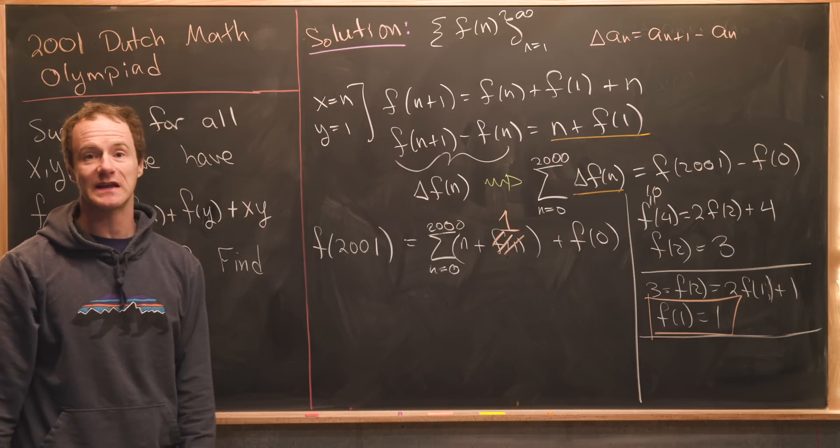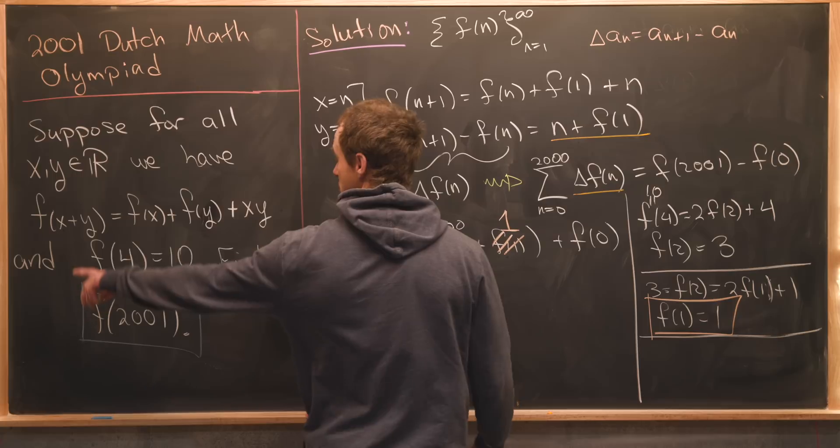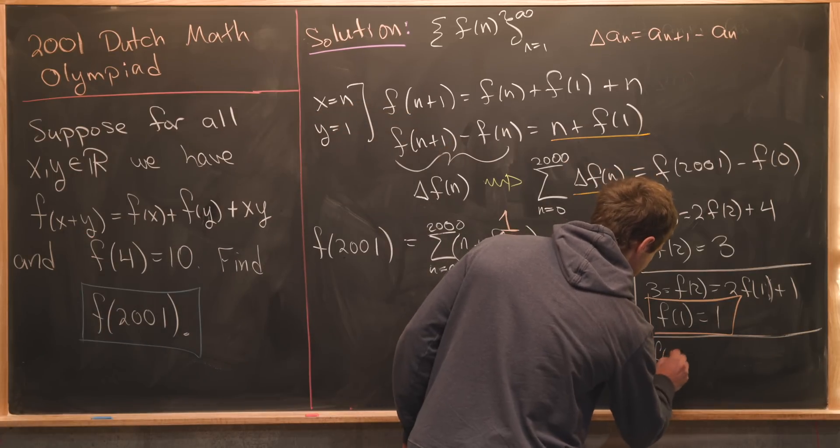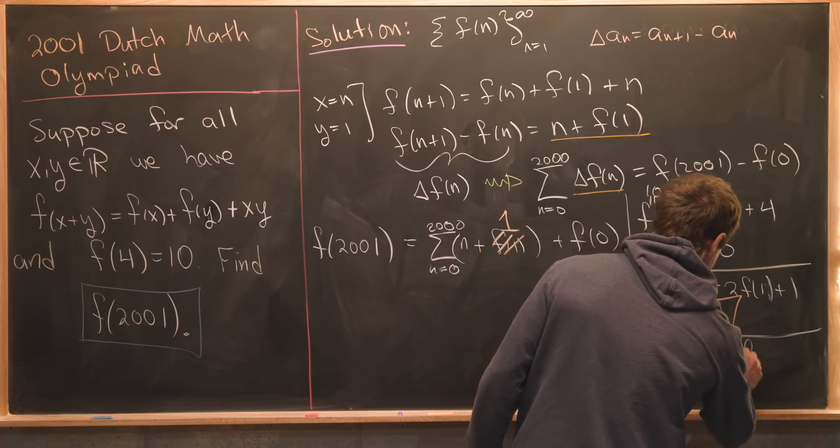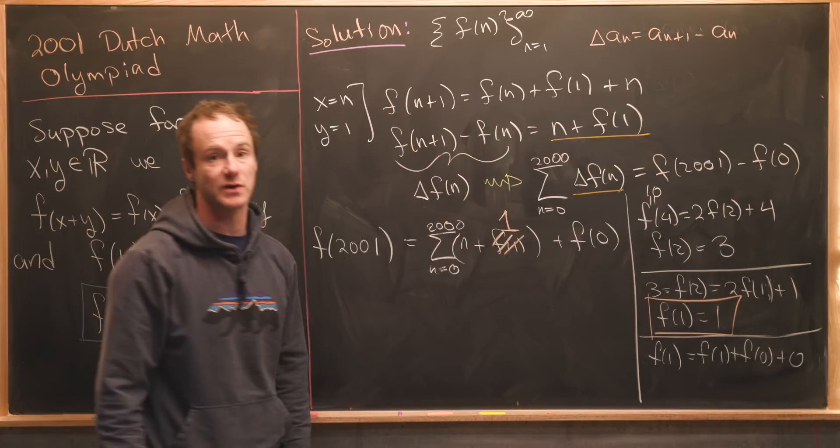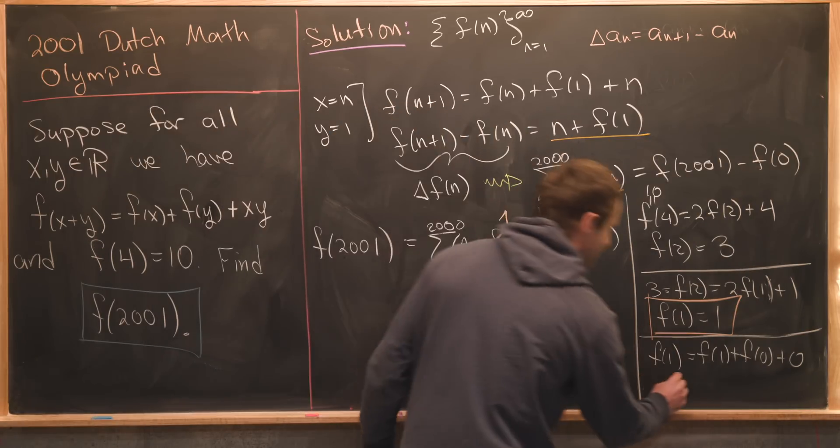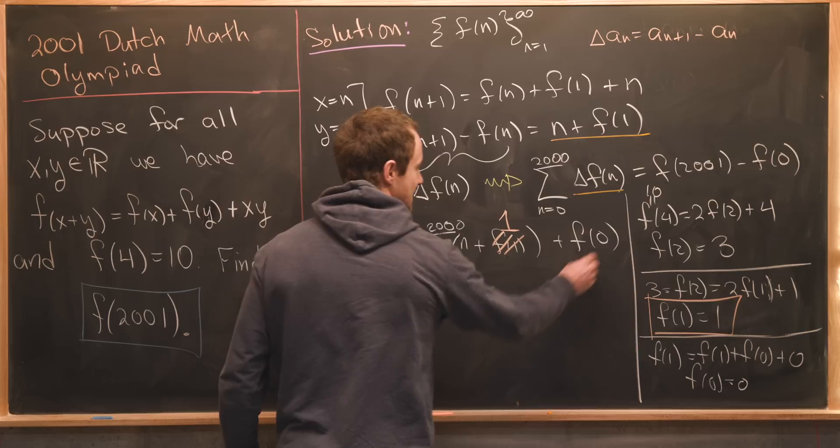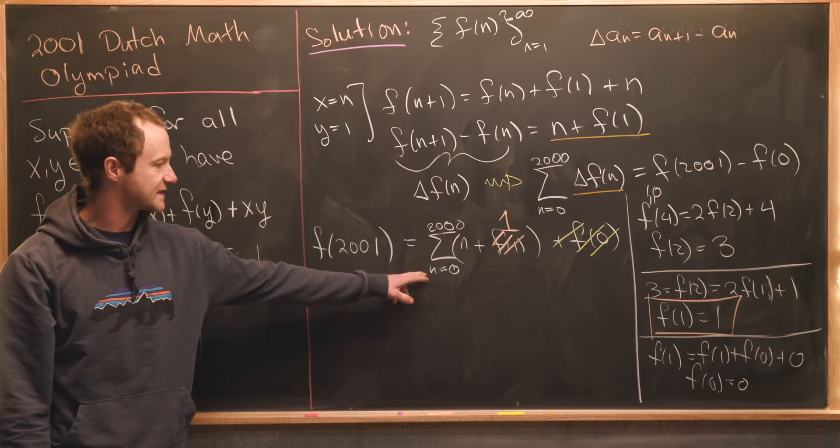Finally we need to calculate f of 0. Here we can use x equals 1 and y equals 0 to give us f of 1 equals f of 1 plus f of 0 plus 0 because we've got 0 times 1 there. Looking at that we see that f of 0 is equal to 0. So that means we can cancel out this f of 0 term.